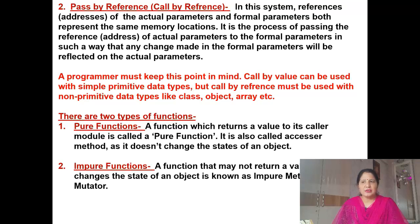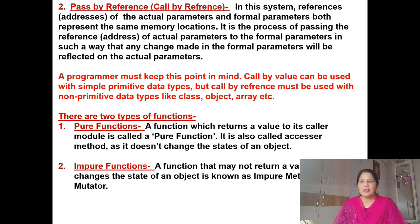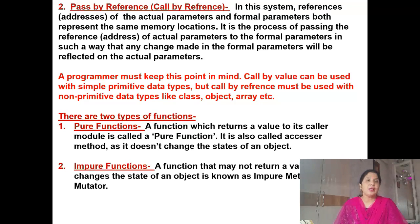In pass by reference, any change made in the formal parameter will be reflected on the actual parameter. Call by value can be used with simple primitive data types, but call by reference must be used with non-primitive data types like class, object, and array. Primitive data types include int, double, string, char, etc. Non-primitive data types are only three: class, object, and array.